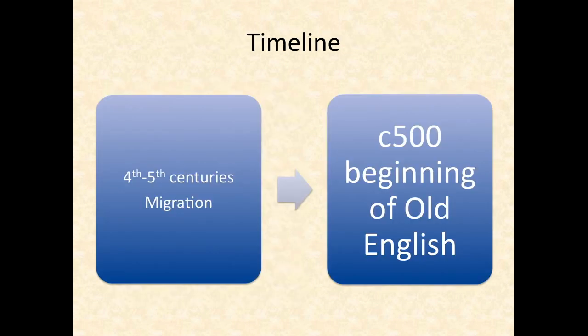So about 500 Common Era, we start to talk of the beginnings of Old English, as different Germanic languages or dialects from the continent developed into a new language in England. Celtic appears to have had relatively little effect on Old English outside of place names, and we're not exactly sure why or exactly how much effect it did have. So much of what we call the Anglo-Saxons had a mix of Germanic and Celtic heritage, and Roman, possibly immigrants from Africa, perhaps Asia, and pre-Celtic inhabitants of England.